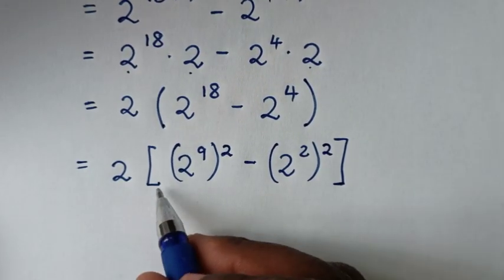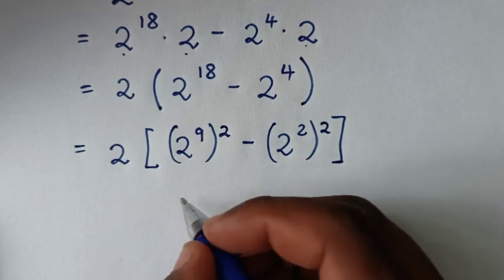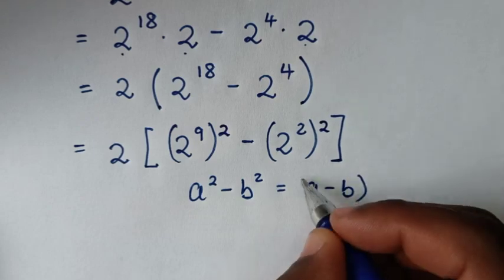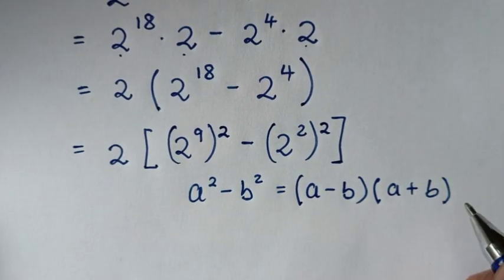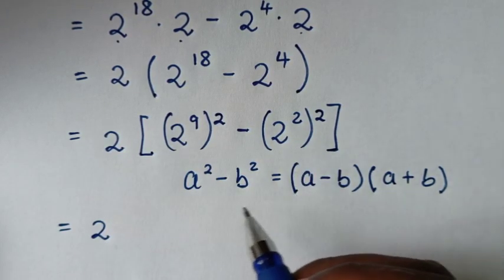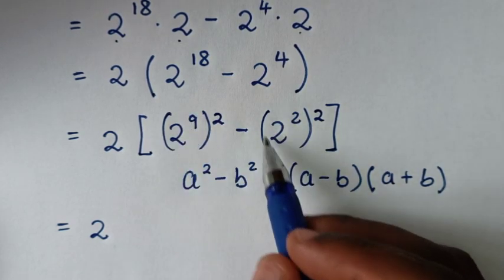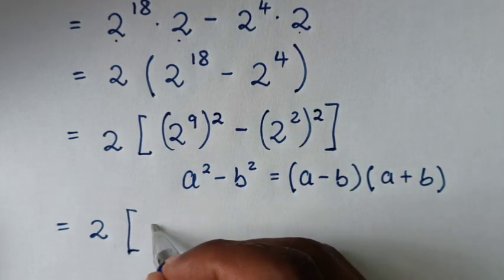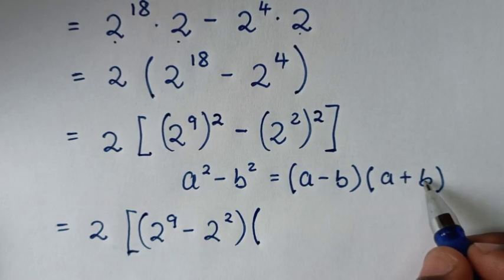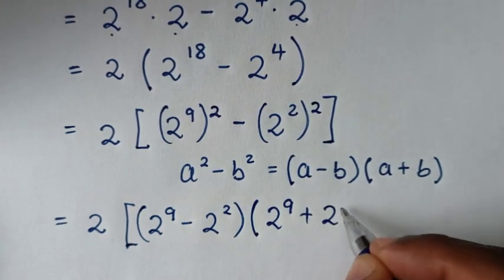Then in the next step, from here, inside this bracket is in the form of a perfect square, so we will apply the perfect square rule which is a squared minus b squared equals a minus b, bracket, times a plus b, bracket. So here it will be bracket 2 power of 9 minus 2 power of 2, bracket, times bracket 2 power of 9 plus 2 power of 2, bracket.